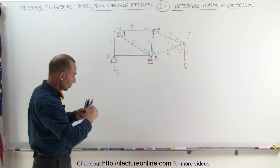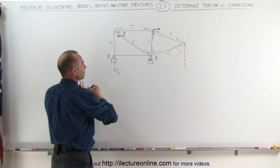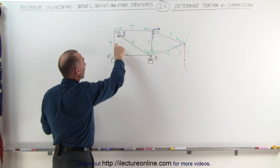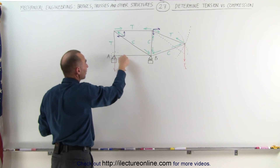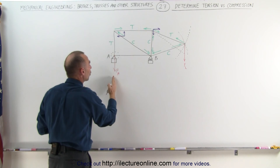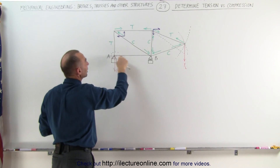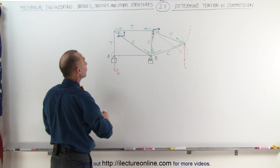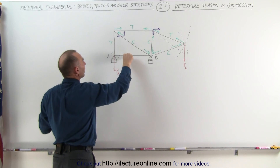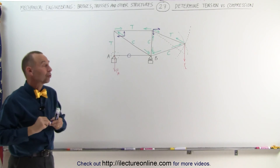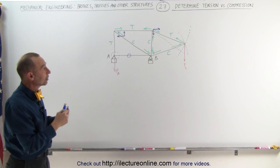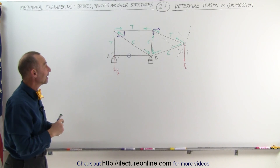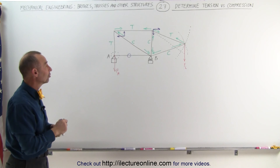Finally, one more joint to deal with. Looking at this joint, notice we have basically three members: one beam right here, a second member, and then a force acting on it. But this force is collinear with this member and perpendicular to this member, which means this member cannot have any force acting on it. This must be a zero force member, and we'll put a zero on top of that. That's how we determine which beams are under compression, which members are under tension, and in this case we also found a member with zero force — a zero force member.